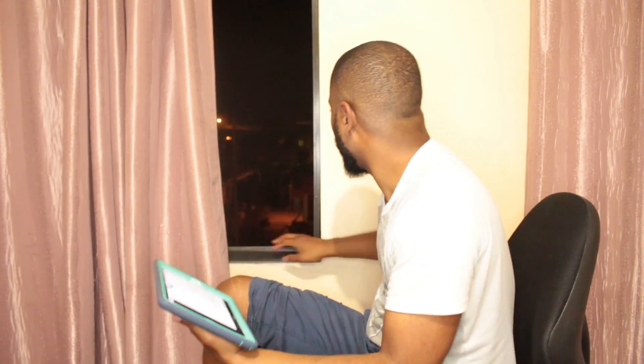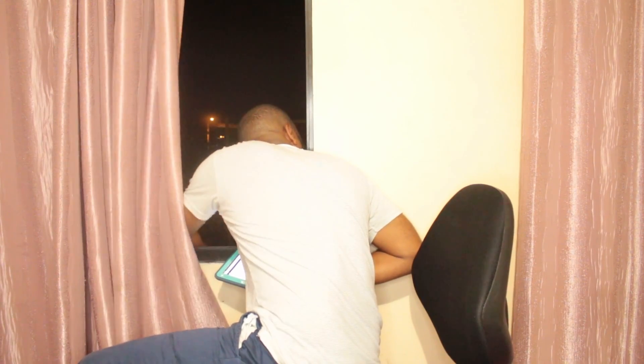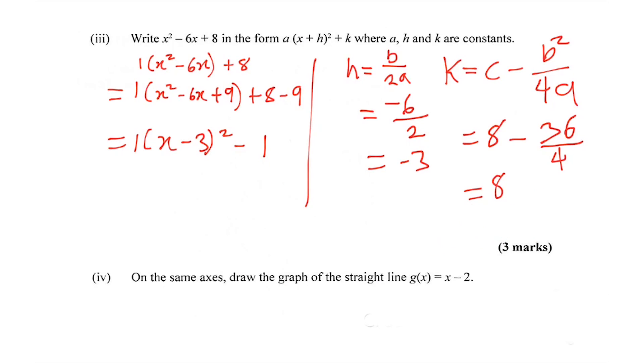Now I did mention that there's another way you could have done this question, and this way would have been the best way actually. Let me just get out all these strokes here. So the best way you could have done this question was to actually realize that the minimum point is (-h, k).